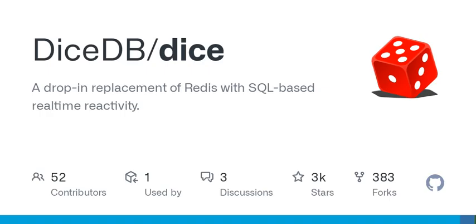For local development or running from source, you will need Golang and one of the supported platform environments: Linux-based or OSX. Clone the DiceDB repository, navigate to the directory, and run the main.go file using Golang.